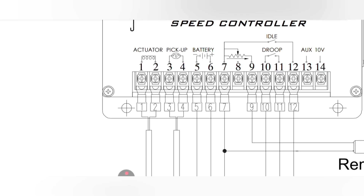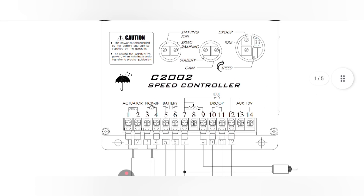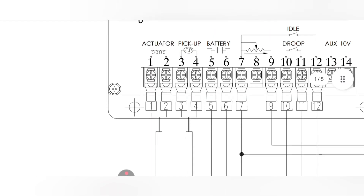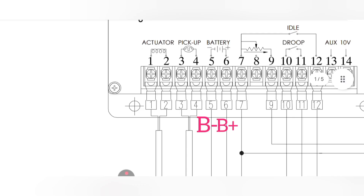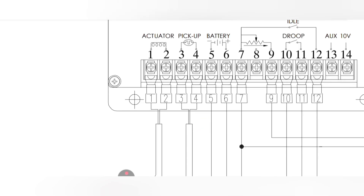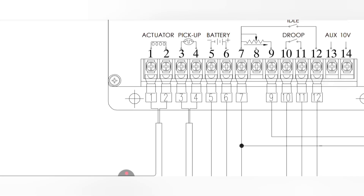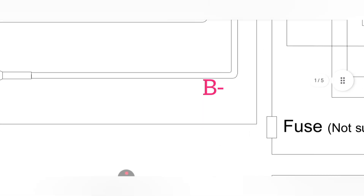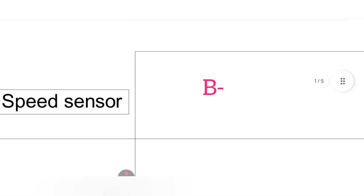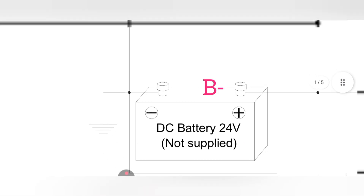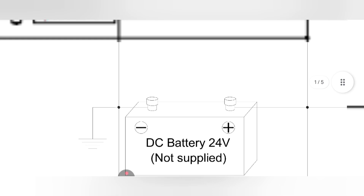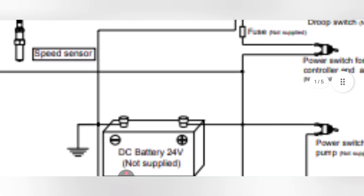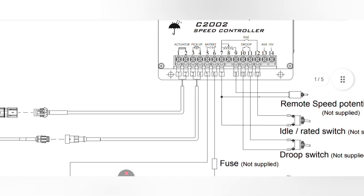Pin number five and six are the battery input to the controller. This controller requires an input supply of 8 volts to 32 volts DC. Pin number five is the battery negative input and pin number six is the battery positive input. Following the pin five wire, it goes to the 24-volt battery and connects to the battery negative, engine ground, and chassis ground.